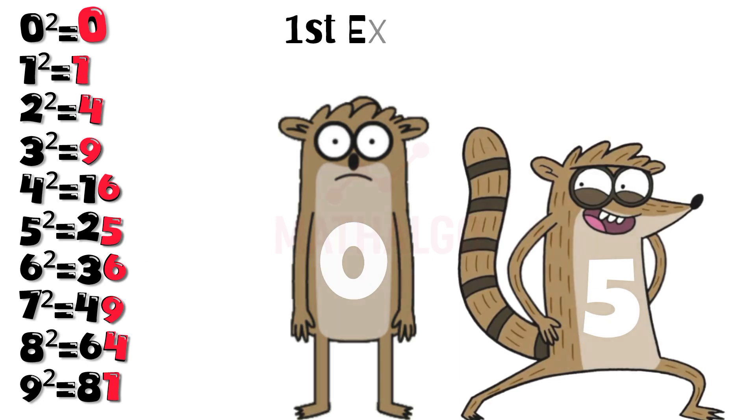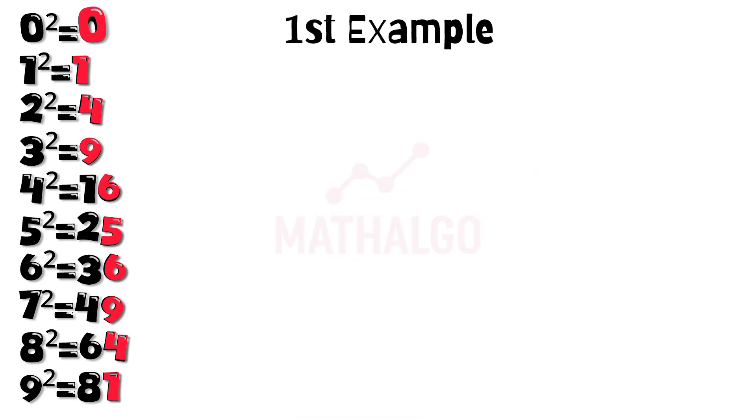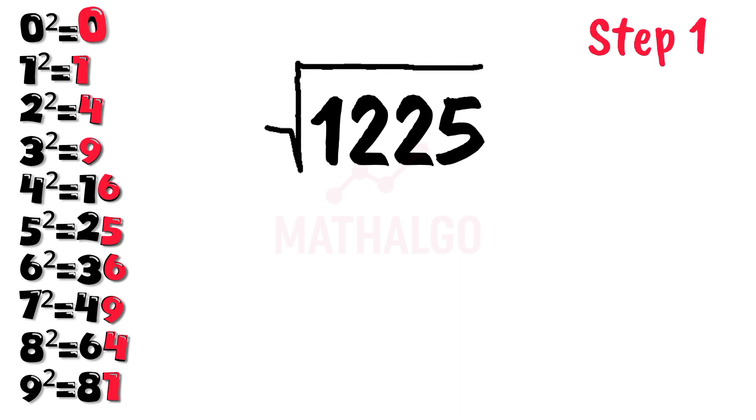All right, let's jump into our first example. We want to find the square root of 1225. Step 1, look at the last digit. It's 5. Remember from before? Only 5 squared ends in 5, so we write down 5.